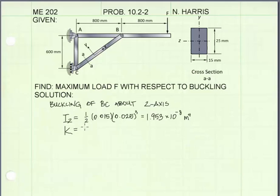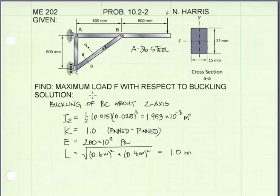We were told for bending about the Z-axis, the member will behave as a pinned-pinned member, and that means our K value is going to be equal to 1.0. We were told in the problem that the member is made of A-36 steel, so that gives us a modulus of elasticity of 200 times 10 to the ninth pascals. The length of member BC is just the square root of the sum of the squares. It comes out to be 1 meter.